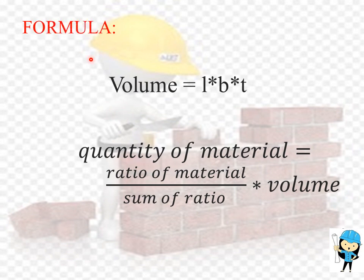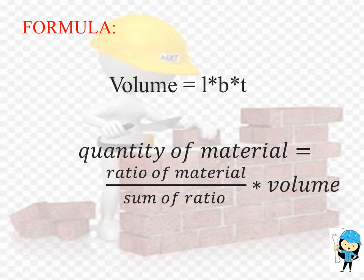The formulas used to find the amount of sand and cement required for plastering are two formulas. First one: volume is equal to length into breadth into thickness. The second formula is the quantity of material, which is equal to ratio of the material divided by sum of the ratio, into volume.